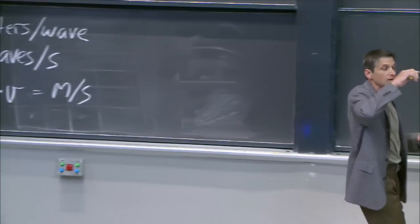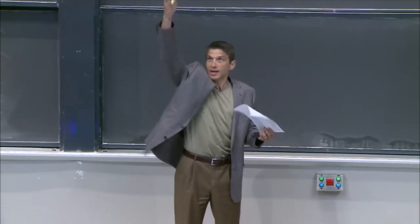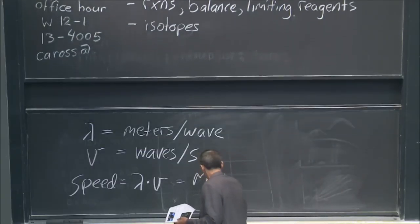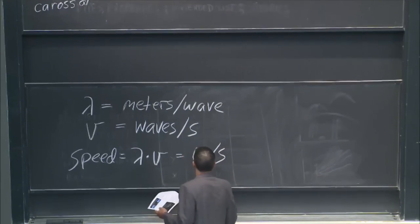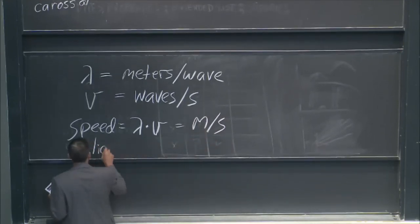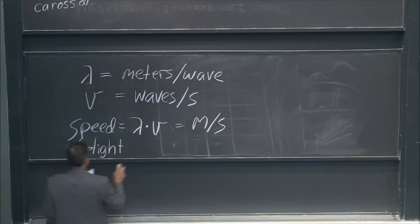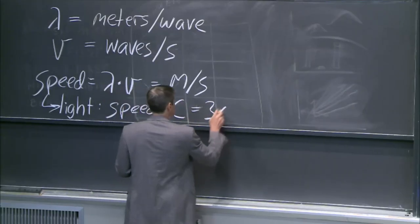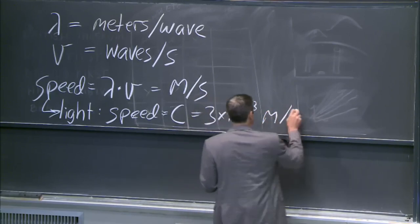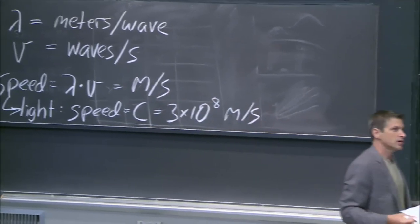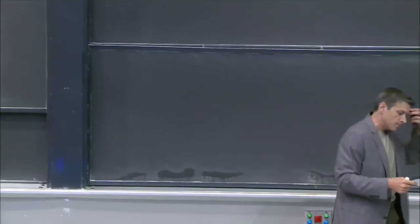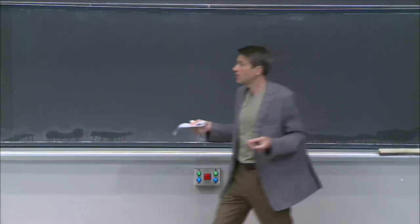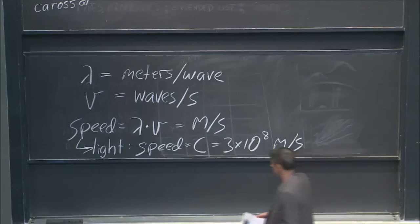Now if you're light — light as in light — then you have a speed that is a constant in vacuum. The speed of light, c, equals 3 times 10 to the eighth meters per second. So if I wanted to know how to go back and forth between frequency and wavelength for light, I can just use this relationship. Let's put an example up there.